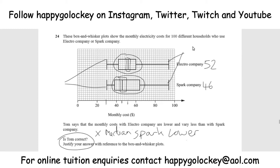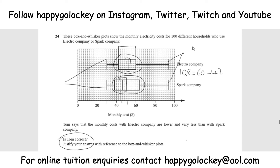Now let's justify why and when Tom could be correct. Sticking with the inter-quartile range, the middle 50% of people for Electro are between these two points. Looking at those points, we've got 42 up to 60. So the inter-quartile range for Electro is 60 take away 42, which is $18. That's how much it varies between the middle 50% of people that pay the bill — so we're cutting off the extremes, the super cheap and the super expensive, and focusing on the middle 50%.